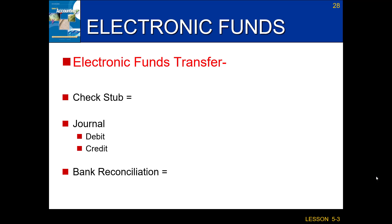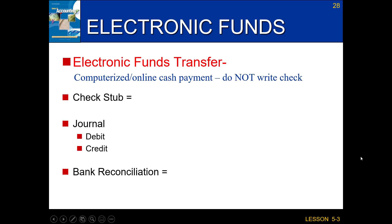The first is what's considered an electronic funds transfer. An electronic funds transfer is when you have a computerized or an online cash payment. You're not actually writing a check, but the money is still coming out of or tied to your checking account. So we do have to make a record of it on our check stub, which also goes under that other section.